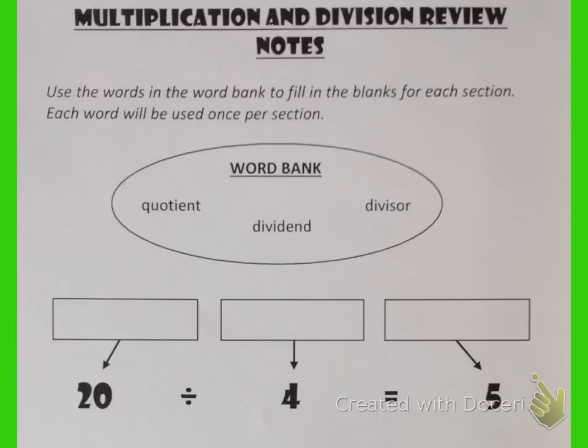Let's take a look at this first division problem, 20 divided by 4 equals 5, and we can go ahead and identify the different parts. Well, 20 is the number that is getting divided by something. It's being split into smaller pieces, so that means it is our dividend.